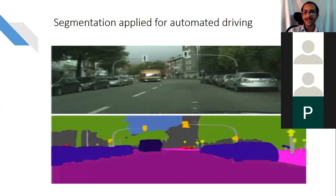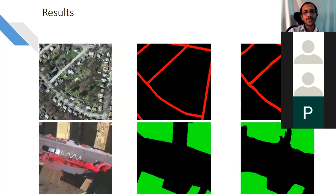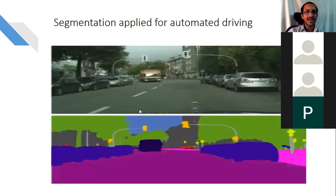Segmentation can be applied to different datasets. One widely used dataset is the Cityscapes dataset, which contains images of city scenarios with vehicles, persons, and road scenes. At each pixel, a label is provided — whether it is a traffic light, trees, road, vehicles, and so on.